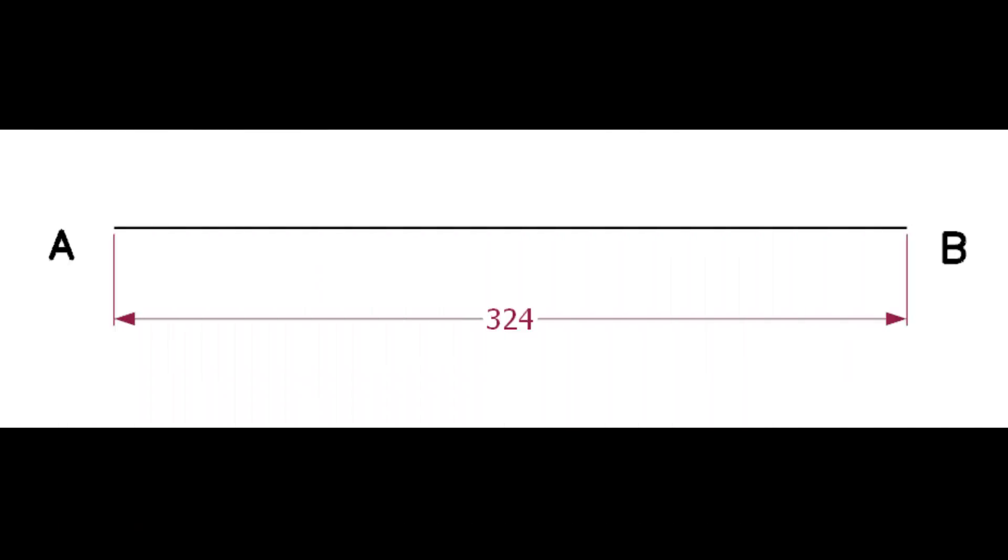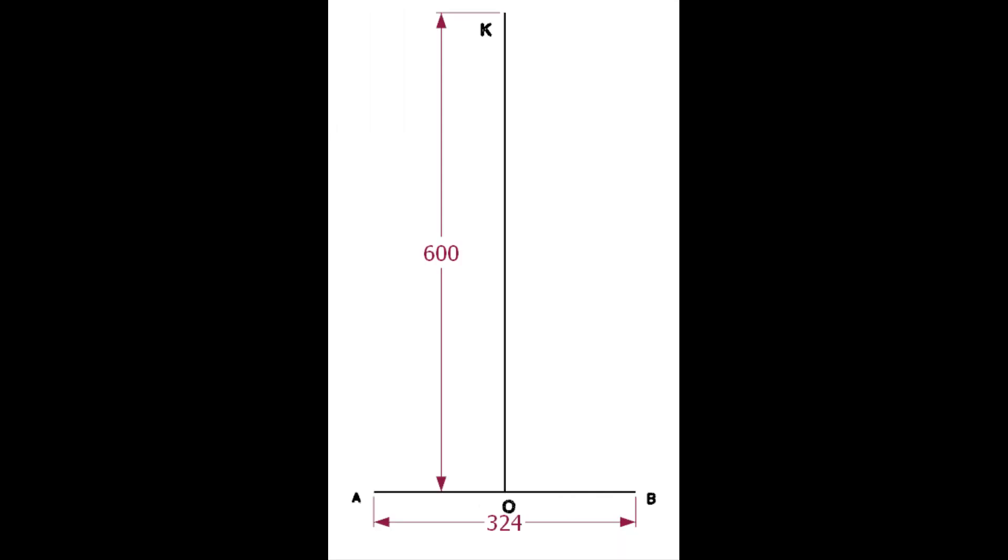Draw a line AB of length 324 millimeters, that is the OD of the pipe. Draw the line OK, the length of the line is not important, but must be more than the pipe diameter.